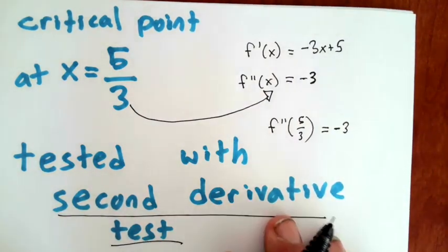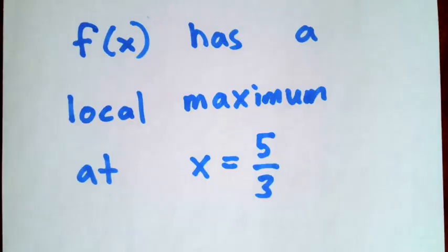By the conclusion of the second derivative test, we can say that f(x) has a local maximum at x = 5/3.